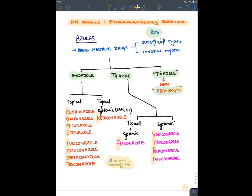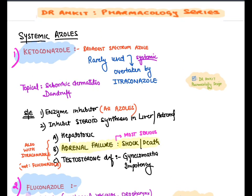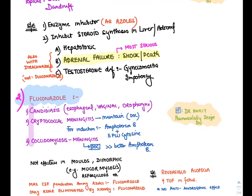Other miscellaneous topical antifungal drugs include benzoic acid with salicylic acid (Whitfield's ointment), haloprogin, undecylenic acid, tolnaftate, azoles, nystatin, and ciclopirox olamine. Ketoconazole, the first azole developed, is rarely used systemically now — it is still used as a topical shampoo for seborrheic dermatitis and dandruff. Its problems: enzyme inhibitor, hepatotoxic, causes adrenal failure and gynecomastia due to testosterone deficiency.